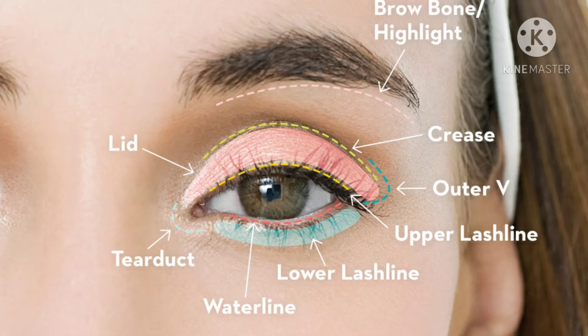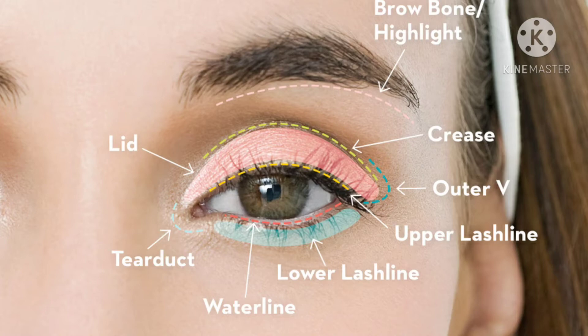Now let me tell you what colors to apply in each part. In the crease, apply matte colors like dark brown — it will look beautiful. In the outer veil, apply the same color as the crease. On the eyelid, the color can be anything depending on your occasion or dress. In the brow bone, don't apply any color. Your eyeshadow should stay below the crease and not extend beyond it, otherwise the makeup won't look nice.